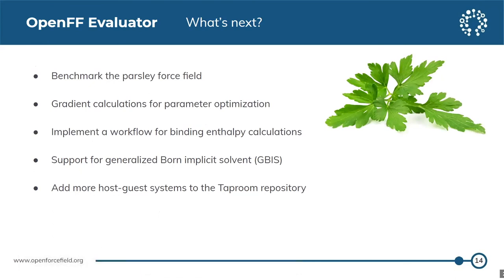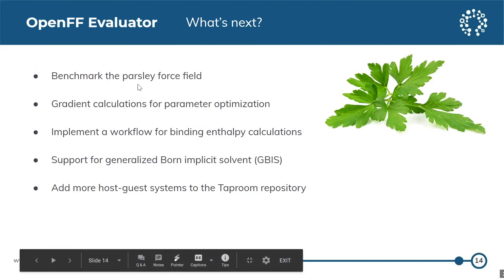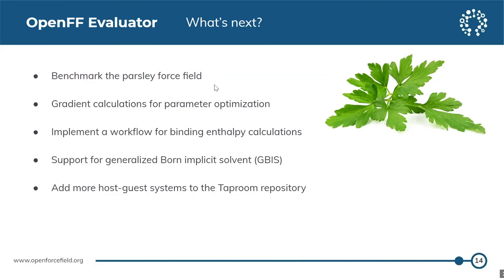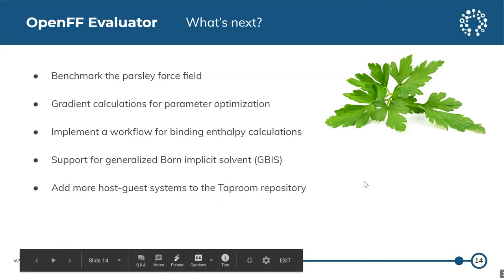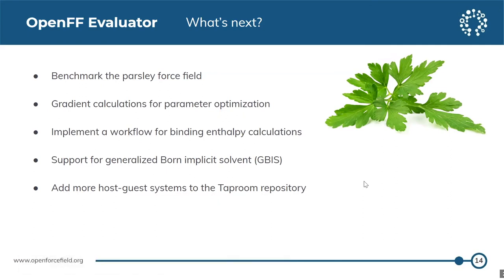What's next? In the not too distant future, we would like to benchmark the Parsley force field and see how well it performs with the host-guest systems. We need to implement gradient calculations, which will be needed for parameter optimization. We also plan to include a workflow to calculate binding enthalpy, since we have the experimental numbers for that as well. We want to add support for implicit solvent as part of the host-guest calculations — there is interest for this in the Nicholson lab. Last but not least, we would like to expand our training data beyond the current 43 host-guest pairs, possibly including other host-guest systems beyond cyclodextrins.